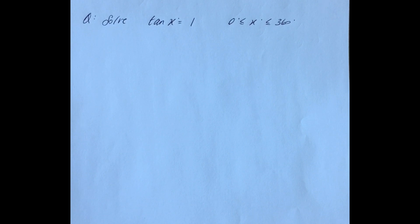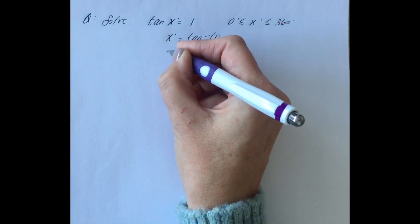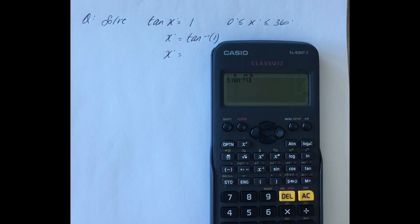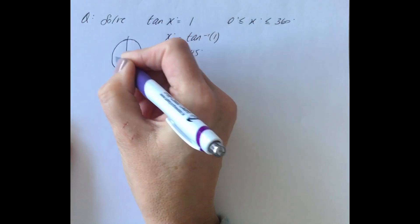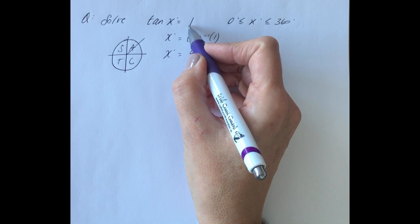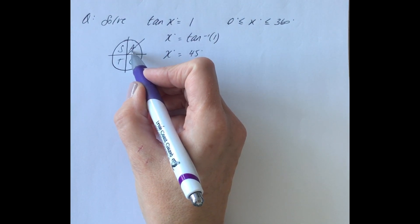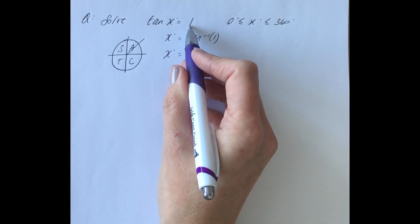Let's try the next question — press pause if you're feeling confident. We're looking for angles between 0 and 360 degrees, so we know we're looking for two solutions. First, solve it the way you would at junior cycle: tan inverse 1. When I do that on the calculator, tan inverse 1 is 45 degrees — there's my first solution. To consider where the other solution is, I get my unit circle. My 45 degrees is in the A quadrant, which makes sense because the result is positive. The other quadrant where the tan curve gives positive results is in T.